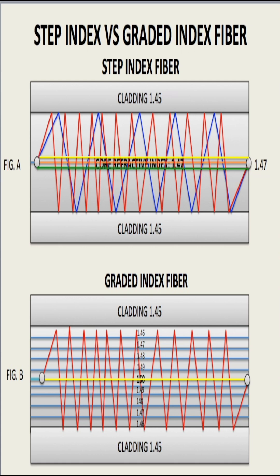When light enters a multimode fiber cable, it is broken up into many light paths of different lengths. So the time light takes to travel from one end to the other on each path may vary. Light from the shorter paths would get to the receiver first.